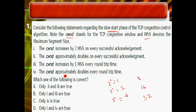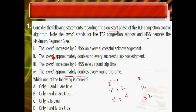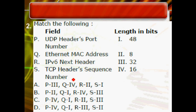The correct answer is option C — only statement 4 is true. Statement 4 states that the congestion window approximately doubles every round trip time. That is the answer for this question.